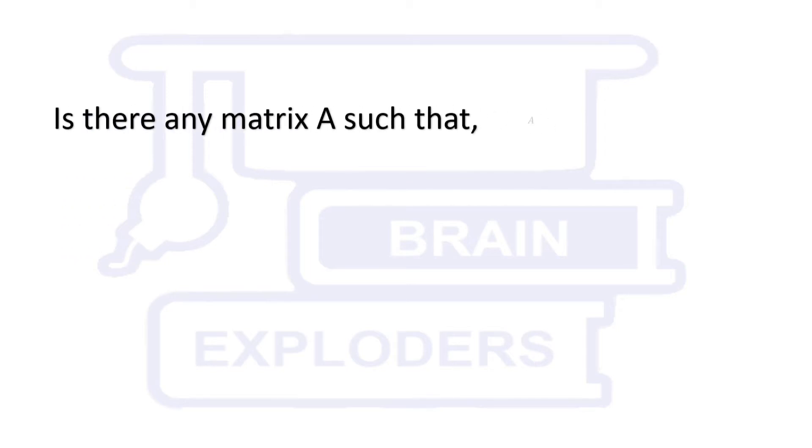Is there any matrix A such that A² is equal to A, but A is neither identity matrix nor null matrix?